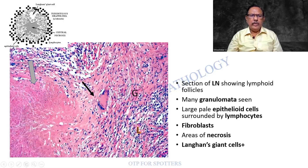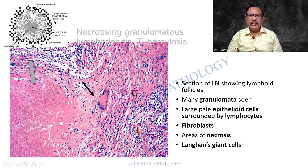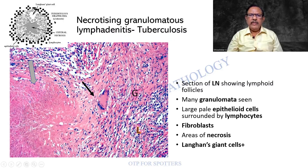Look at the area of necrosis. This kind of picture will be focused for you in the exam. And this is just a line sketch of it. The diagnosis is necrotizing granulomatous lymphadenitis — tuberculosis.